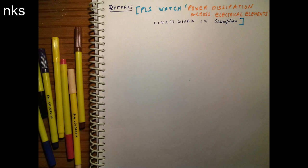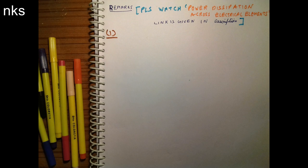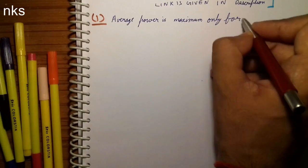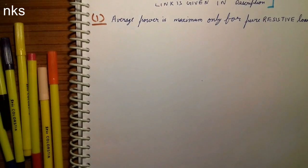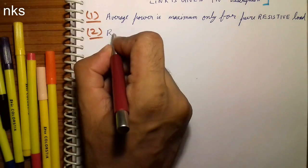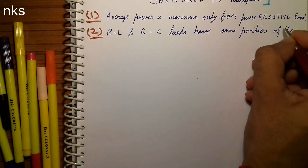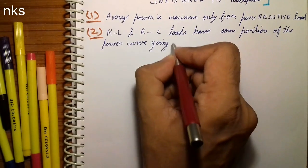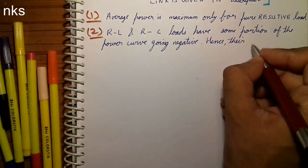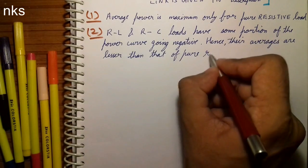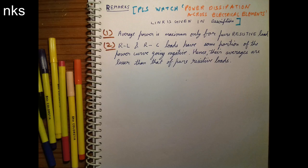So point number one: average power is maximum only for pure resistive load. Point number two: RL and RC have some portion of the power curve going negative, hence their averages are lesser than that of pure resistive loads. Hope you understand these two points. These two are most important, and we can conclude these two points if you have understood the previous waveforms and circuits.